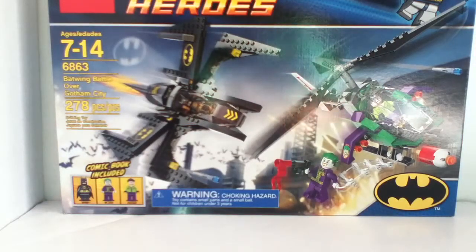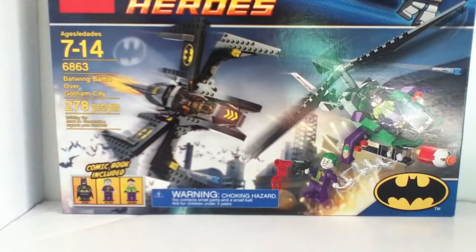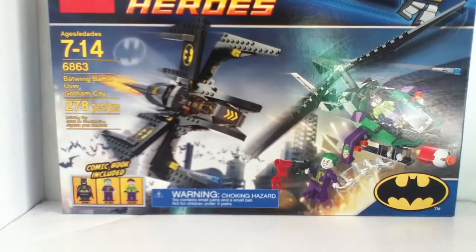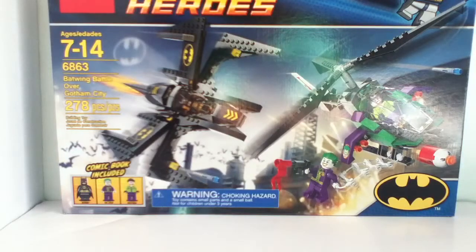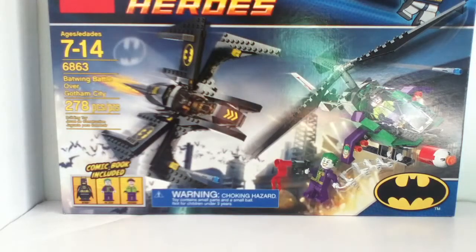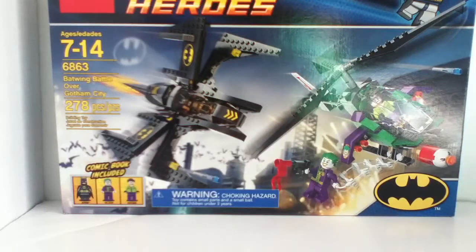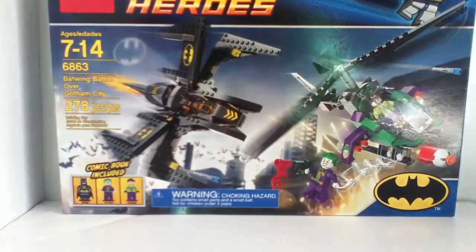This is one of my favorite sets out of the line. It's Batwing Battle over Gotham City. It's ages 7 to 14, set number is 6863, 278 pieces, and retails for $35.